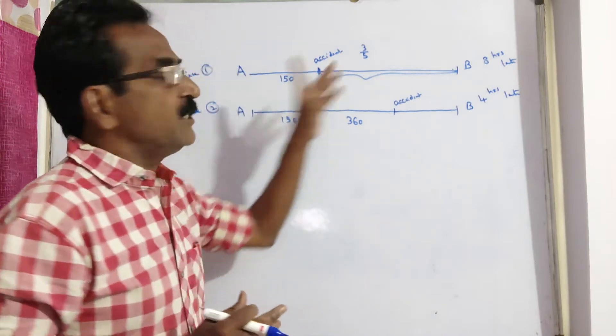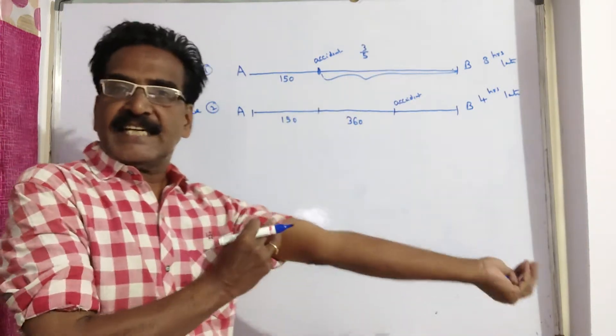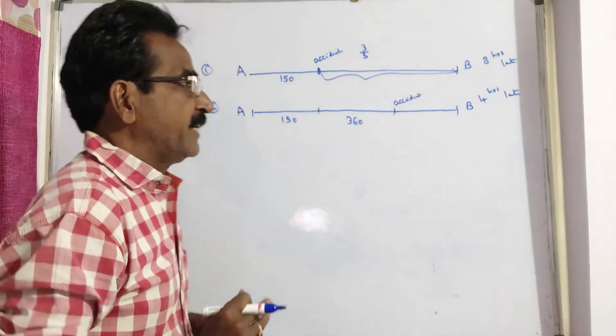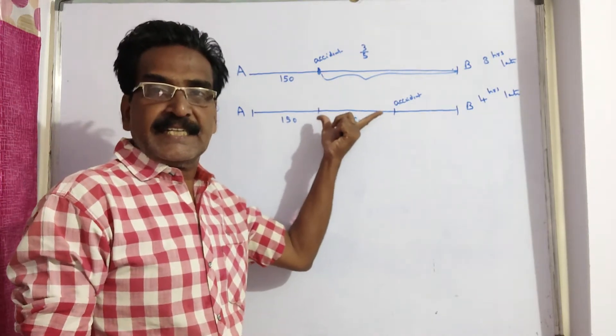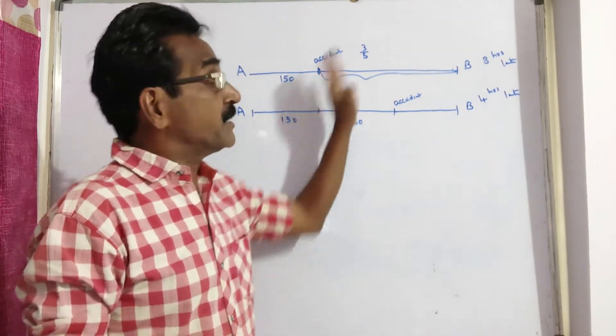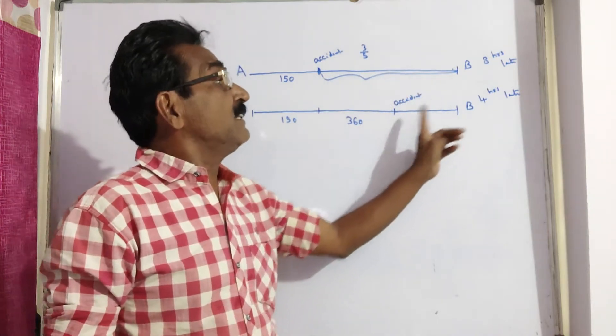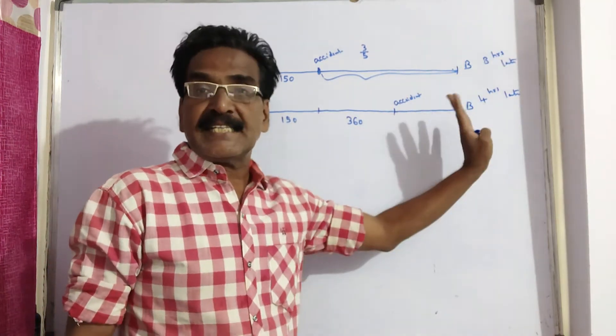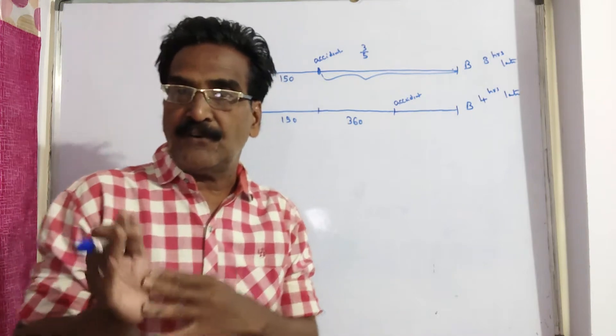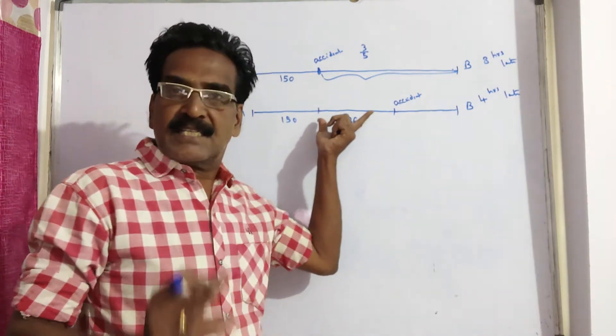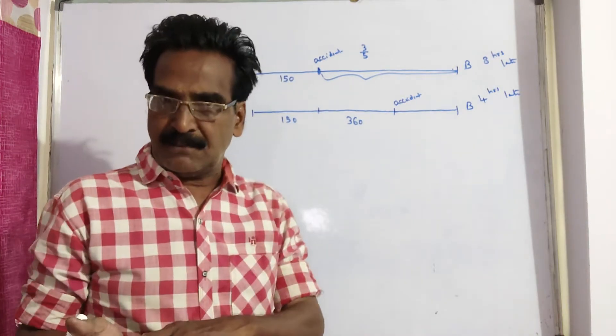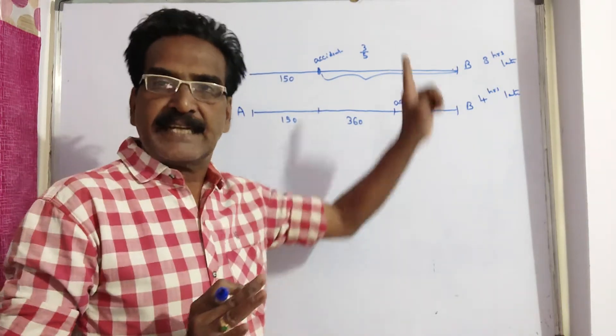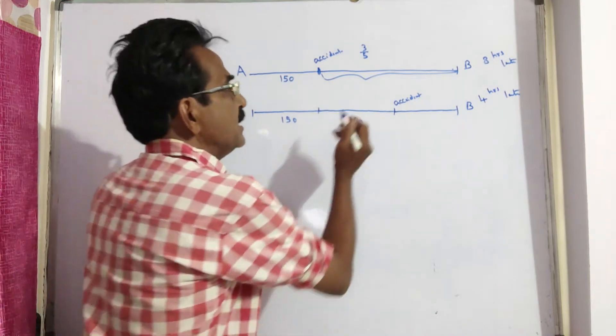What is the distance between A and B? First let us find the speed of the train. It is simple. In the second case, the accident occurred 360 km further, and for that reason it reaches the destination only 4 hours late. That means to travel this 360 km with original speed and reduced speed is 4 hours, 8 minus 4, 4 hours.